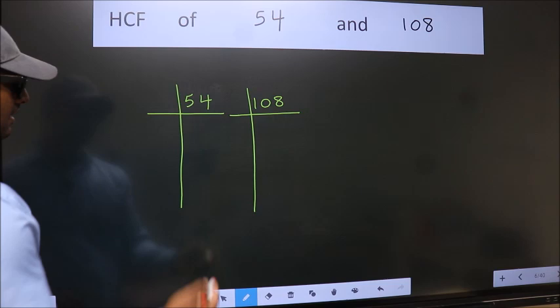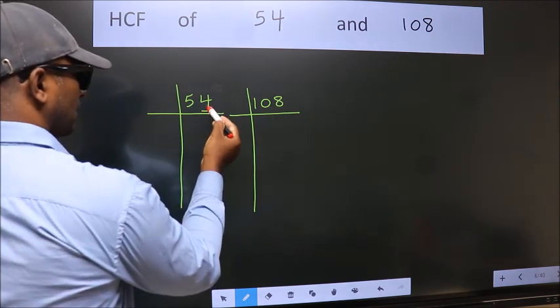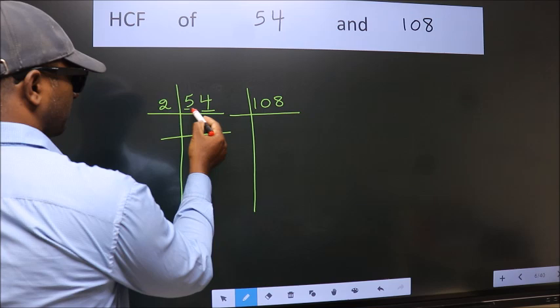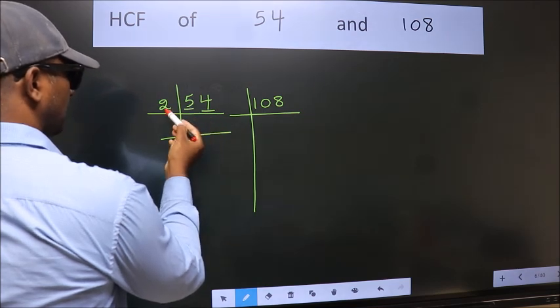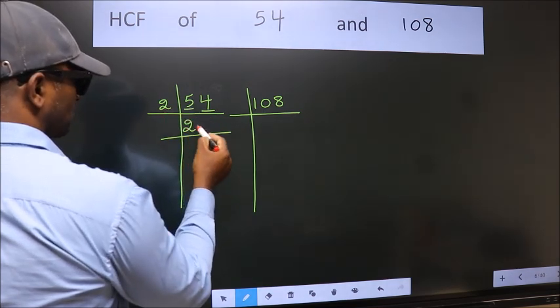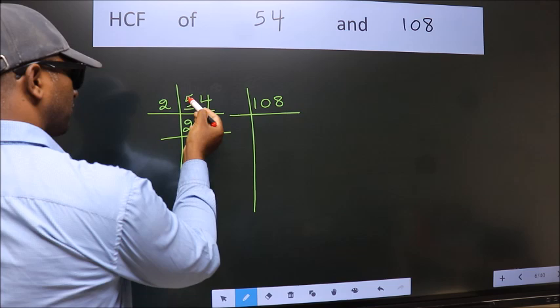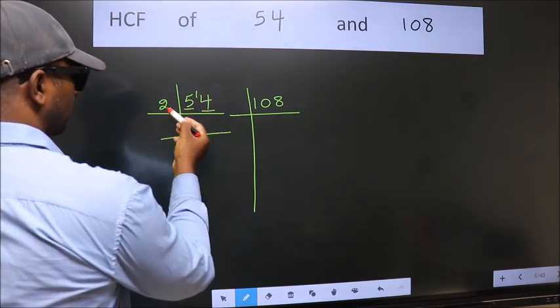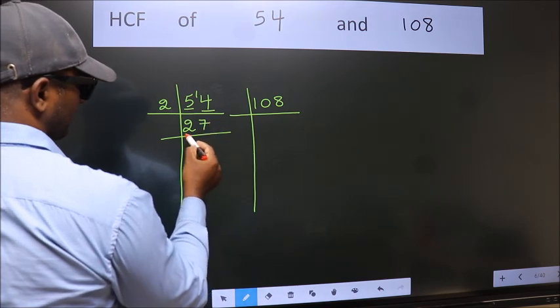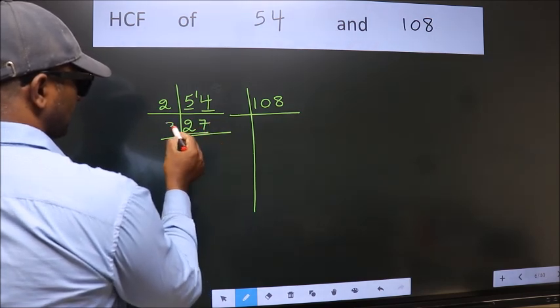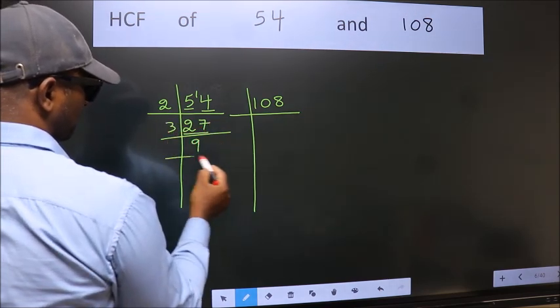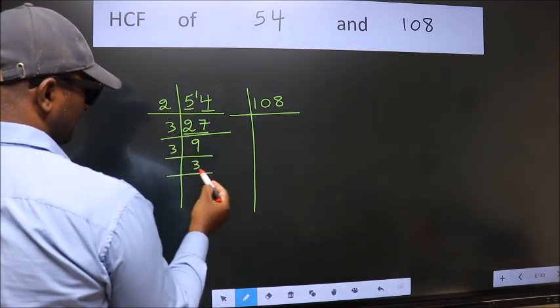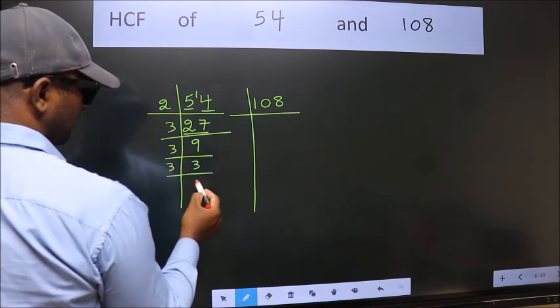Next. Last digit 4, even, so take 2. First number 5, a number close to 5 in 2 table is 2 twos, 4. 5 minus 4, 1. 1 carried forward 14. When do we get 14 in 2 table? 2 sevens, 14. 27 is 3 nines, 27. 9 is 3 threes, 9. 3 is a prime number, so 3 once, 3.